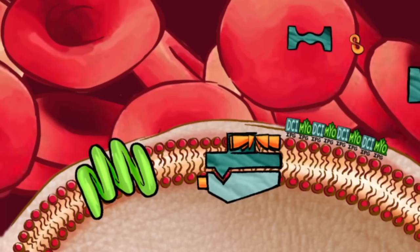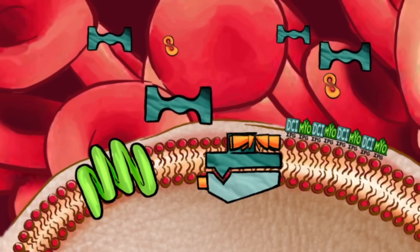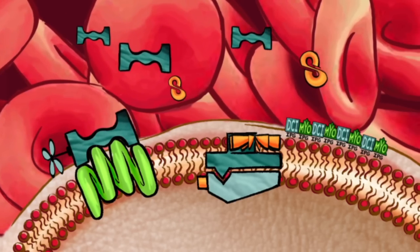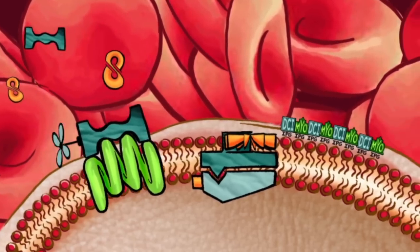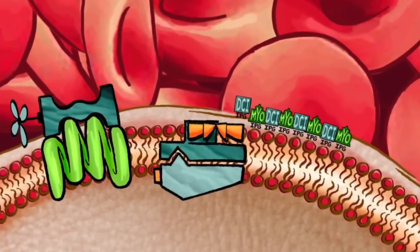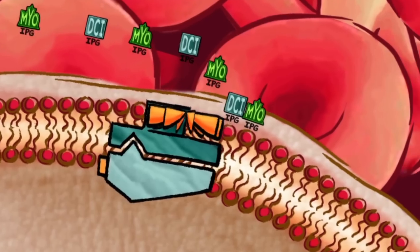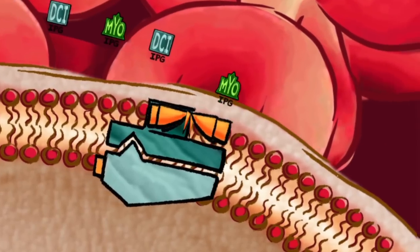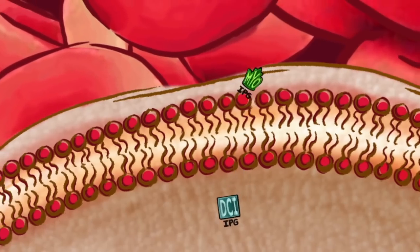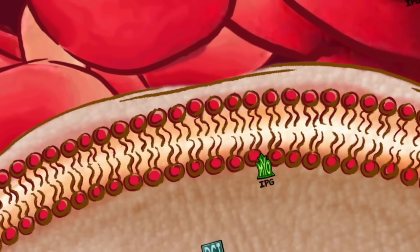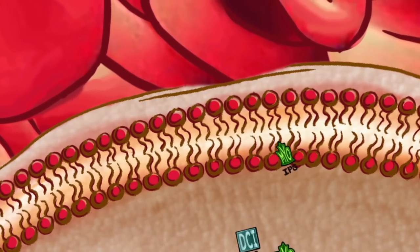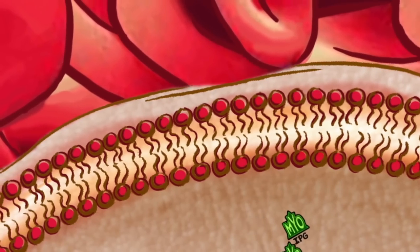In healthy individuals, the insulin binds to its receptor on the outside of the cells. This activates an enzyme that cleaves the bond between DCI-IPG or MYO-IPG and the cell. These both can then go into the cells — in other words, they let the cell know that it needs to respond to the insulin.